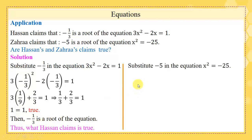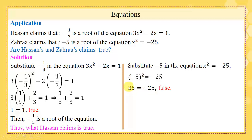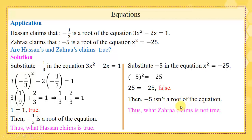On the other side, we substitute negative 5 in the equation x squared equals negative 25. We get negative 5 squared equals negative 25. Since negative 5 squared is a perfect square, the answer is positive 25, which is not equal to negative 25. The statement is false, so minus 5 is not a root of the equation. This means that Zahra's claim is not true.